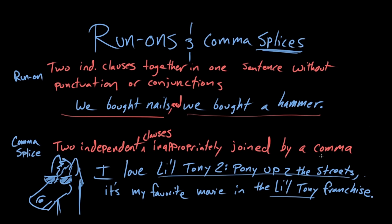We could say: I love Little Tony 2, Pony Up to the Streets, comma, and it's my favorite movie in the Little Tony franchise. Or, as we did in the previous example, we could throw in a semi-colon: I love Little Tony 2, Pony Up to the Streets, semi-colon, it's my favorite movie in the Little Tony franchise.